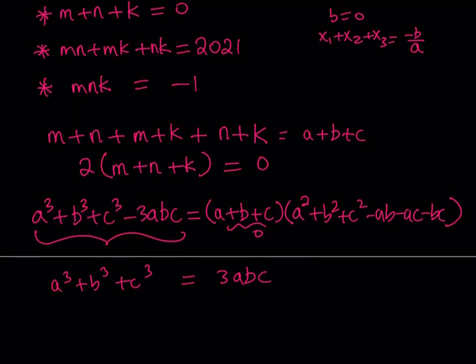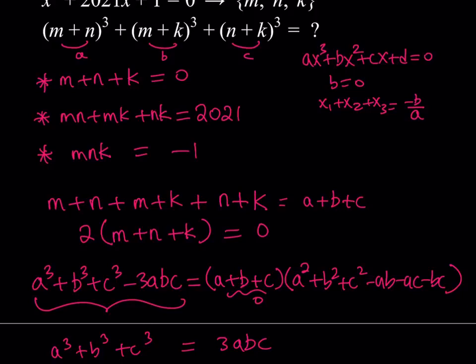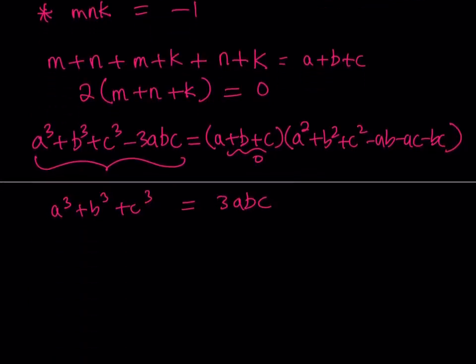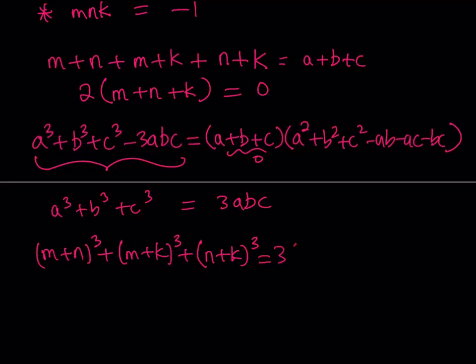So what I'm trying to find is a³ + b³ + c³, where a = m+n, b = m+k, c = n+k. Since a + b + c = 0, we have: (m+n)³ + (m+k)³ + (n+k)³ = 3(m+n)(m+k)(n+k).